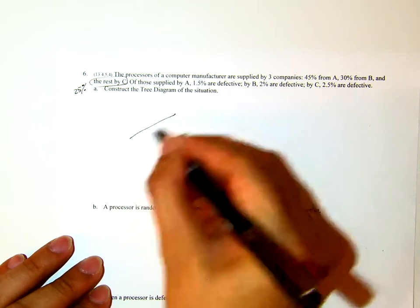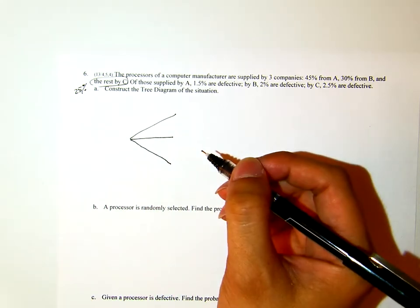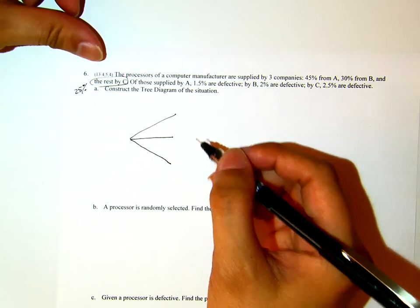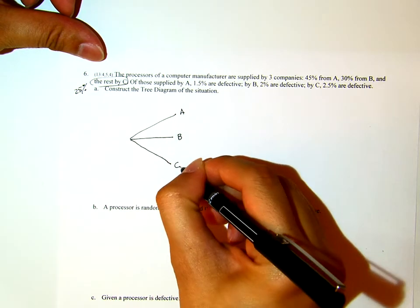Now, we have three branching. The processors of a computer manufacturer supplied by 3 companies: Company A, Company B, Company C.